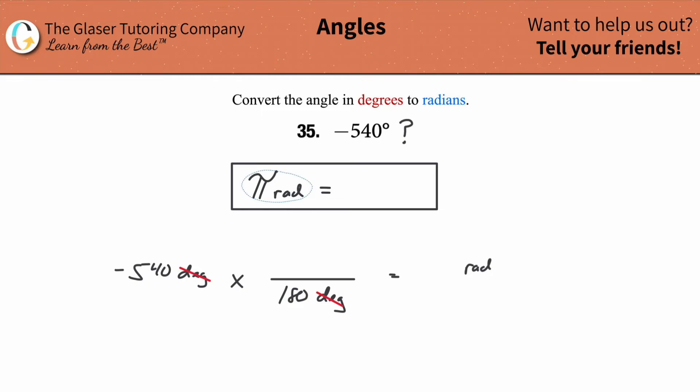Once we do that, then we are forced to put the pi radian value in the numerator of my conversion fraction. Notice the radians won't cancel. I don't want them to cancel because I want my answer in terms of radians. And guess what, ladies and gentlemen, the problem is basically over.